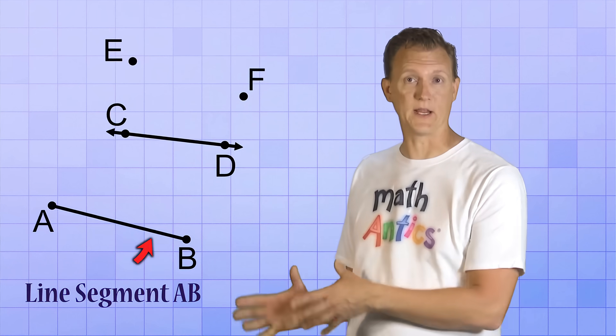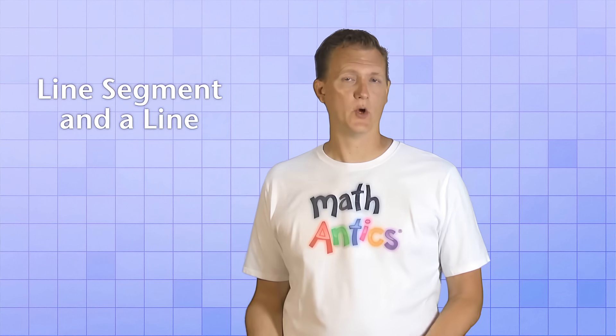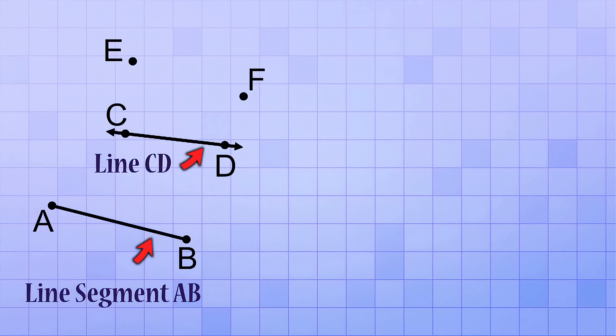So this is Line Segment AB, and this is Line CD. Now there's one more special type of line that we need to talk about, and it's basically a combination of a line segment and a line. We call it a ray. Rays have beginning points, but no ending points. They just keep on going forever, but only in one direction. So we only put an arrow on the end that keeps going. There. We call this one Ray EF.